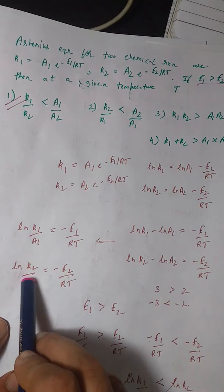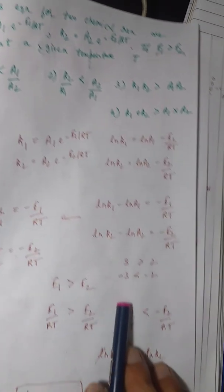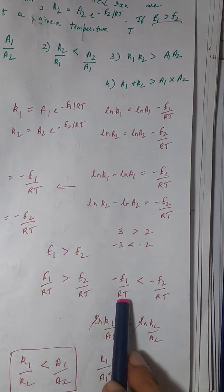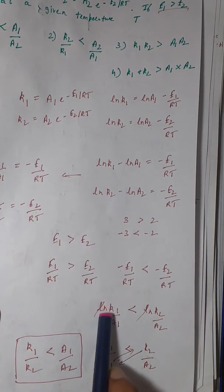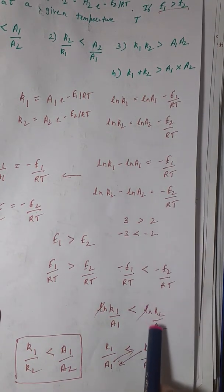-E1/RT is what? Equal to ln(k1/A1). And similarly, -E2/RT is what? ln(k2/A2). So now we replace the values here. So we get ln(k1/A1) is less than ln(k2/A2).